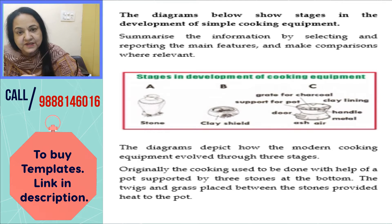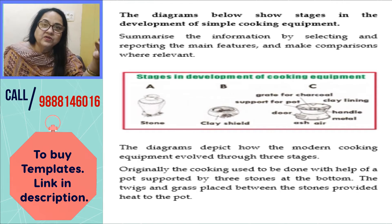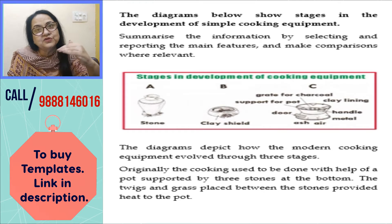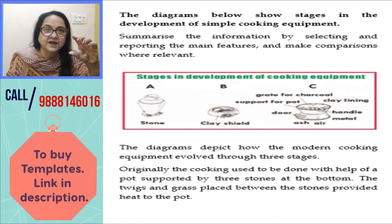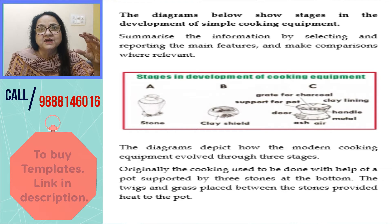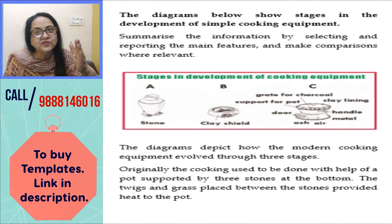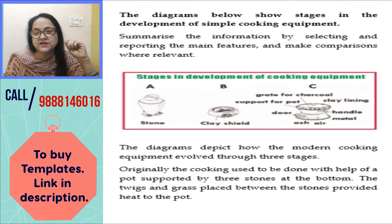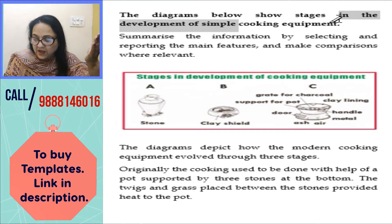Now the topic is: stages in the development of cooking equipment. The cooking equipment stages go right from the Stone Age to an absolutely advanced stage of cooking. The question reads: 'The diagram below shows the stages of the development of simple cooking equipment. You have to summarize the main features.' Now, how are you going to give a comparison and summarize?